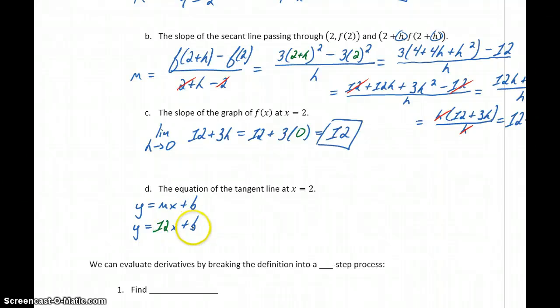So to complete this equation, we need a value for b, so we need to substitute in something for x and y. Since we're considering the point at x equals 2, we can substitute in f(2) for y, which is going to be 12 times our value for x is 2, plus some value b.